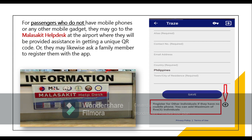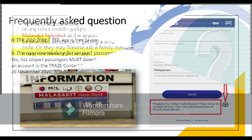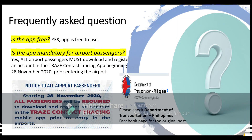The application is easy to use and does not require Bluetooth or GPS to function. It will work even with slow data or WiFi. Trace is free. Starting November 28, 2020, all airport passengers — whether departing or arriving — will be required to download the application on their mobile phones and register an account before proceeding to the airport.